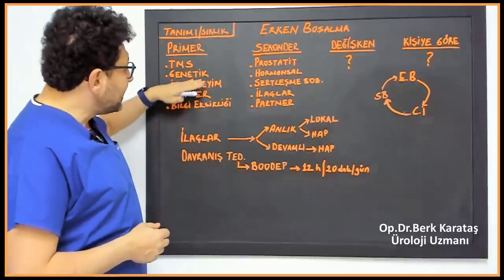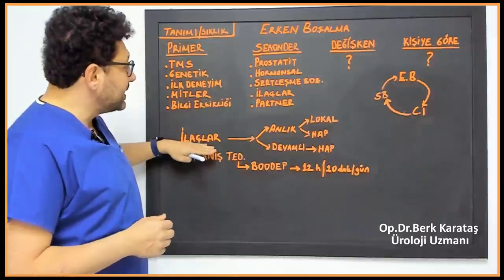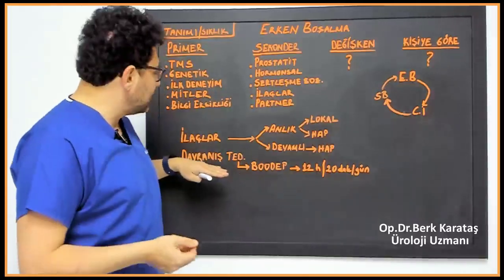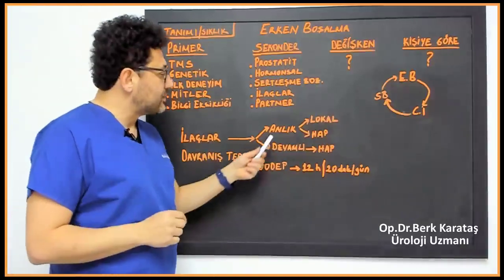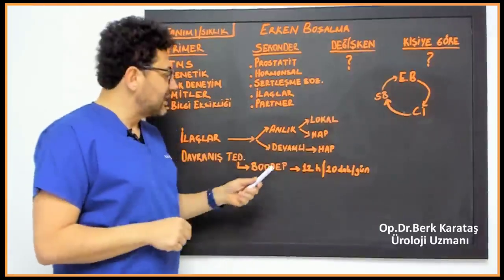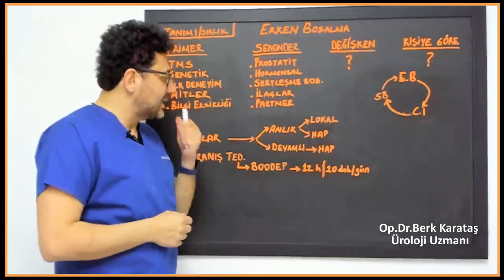Now what remains is this traumatic masturbation syndrome, genetic first experiences, and so on. Here, medicines are mostly used, especially in genetic heat, that is, the rapid sensation of ejaculation. We can divide medicines into two. Medicines used instantaneously, before intercourse. Medicines that we use continuously, regularly, every night.